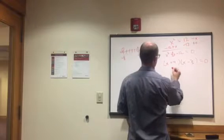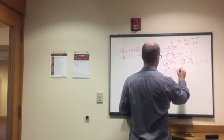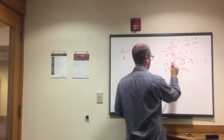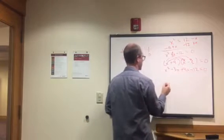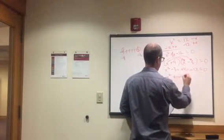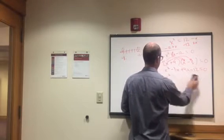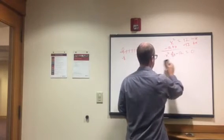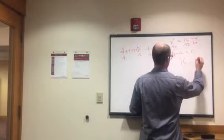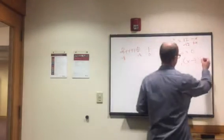So our factored form is (x plus 4)(x minus 3). Let's verify: x times x is x squared, x times negative 3 is negative 3x, 4 times x is 4x, and 4 times negative 3 is negative 12. Combining: x squared, negative 3x plus 4x is plus x, minus 12 equals zero — which is exactly x squared plus x minus 12 equals zero. We set it up correctly.